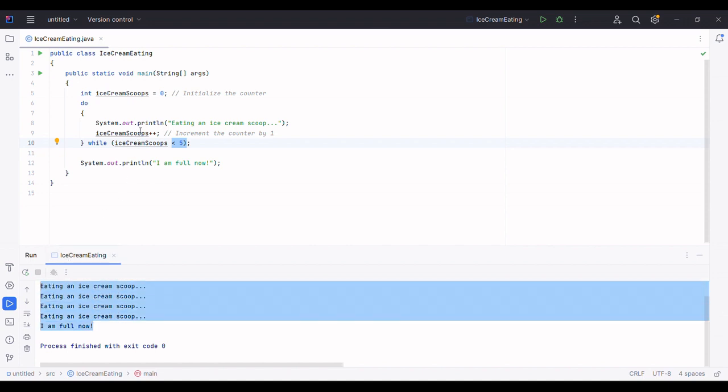The do-while loop is particularly useful when we want to ensure that a code block is executed at least once regardless of the condition. It's like a guarantee that the kid will have at least one scoop of ice cream before checking if they are full.